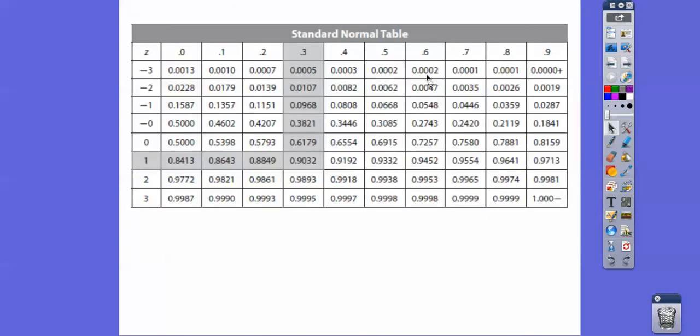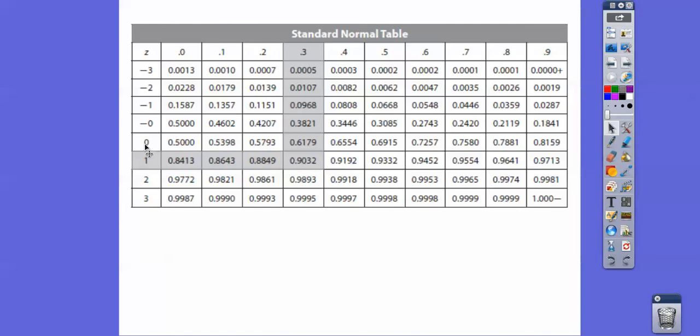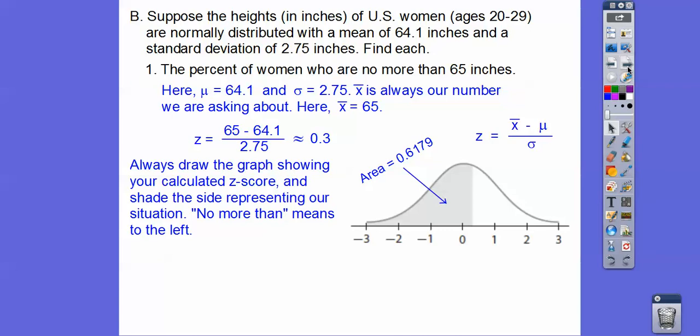So we're looking at positive 0.3, not negative 0.3. So 0.3 is that number right there. This is the table that was given in our textbook. So that's the area right there. So the area to the left is that, and it's asking for percent, so we move the decimal over two places, so about 61.79%.